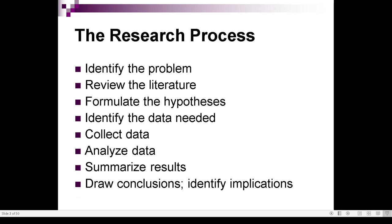I think you may have seen this already in grade seven. This is the entire research process we have to go through in producing our SIP — our junior high school Science Investigatory Project. Number one: identify the problem. Number two: review the literature. Next: formulate the hypothesis, identify the data needed, collect data, analyze data, summarize results, draw conclusions, and identify implications. We're going to go through each step in the next slides.